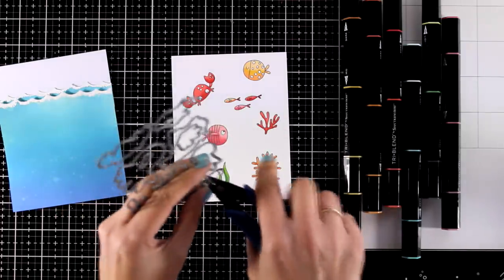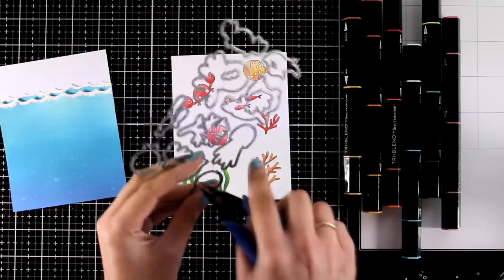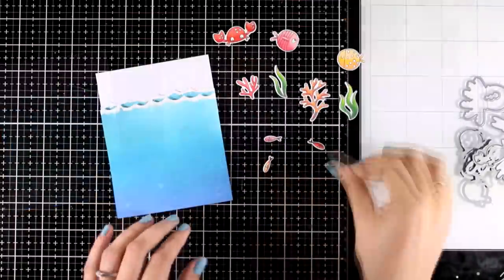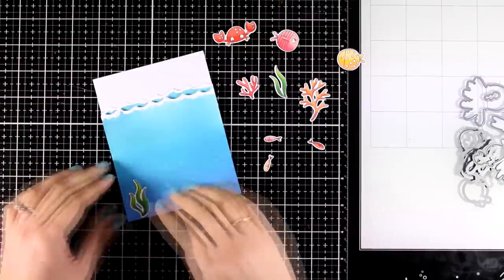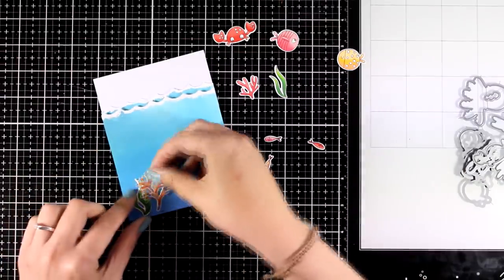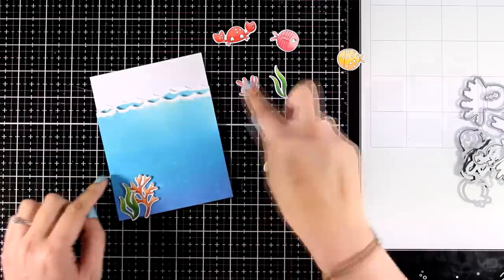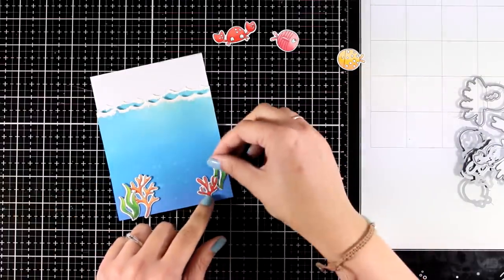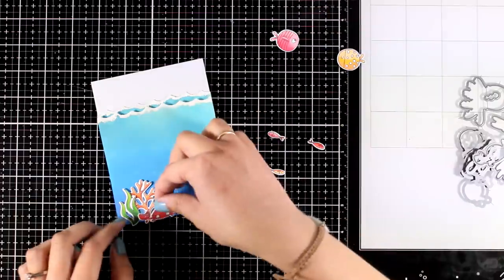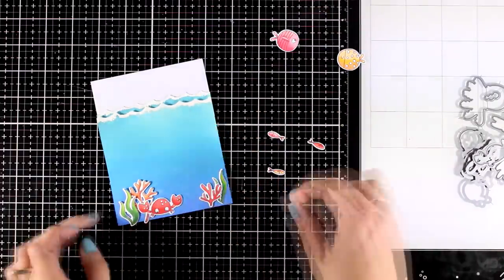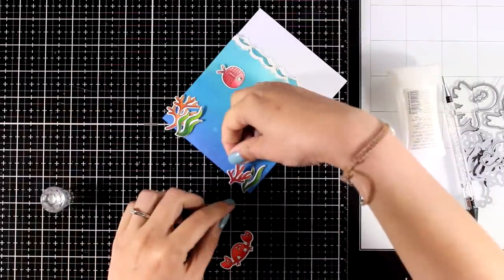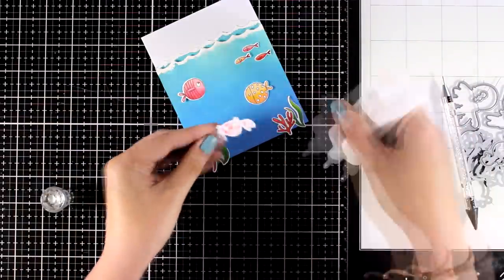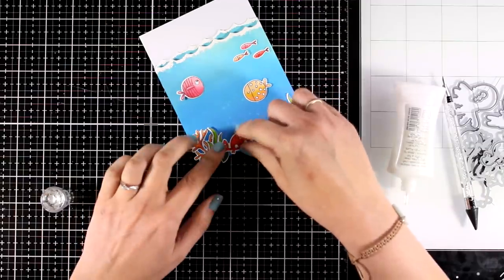So here are all the images ready to go and I'm going to use the matching dies to cut them out. I always like to play a little bit with the placement of all the elements and then once I'm happy I'm going to stick everything down with my glue. I'm not going to use any foam tape here, everything is going to lay flat on top of my ocean just because I already have dimension at the back of my waves. For sticking everything down I'm using my Nuvo Deluxe glue.